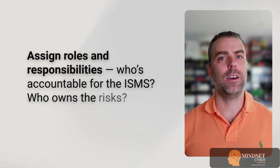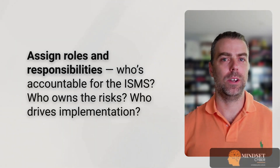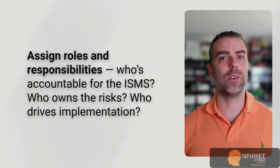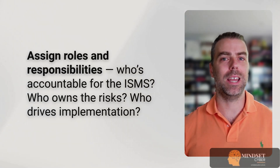With your scope and context defined, the next step is to get your leadership formally involved. This is covered in clause 5 of ISO 27001 and is a requirement that trips up a lot of organisations. Your executives and board can't just delegate security to IT. They need to show visible leadership and commitment to the ISMS. First, assign roles and responsibilities: who's accountable for the ISMS, who owns the risks, and who drives implementation? You will likely appoint an ISMS manager or coordinator to keep things moving.